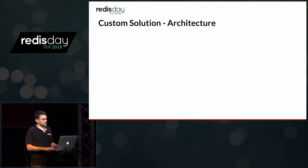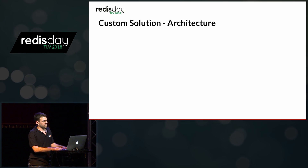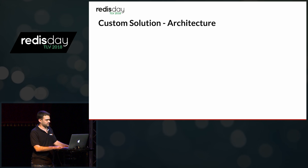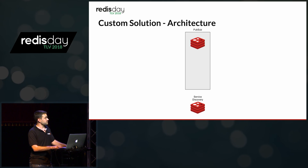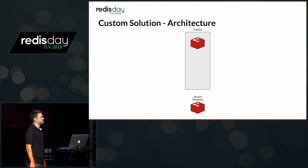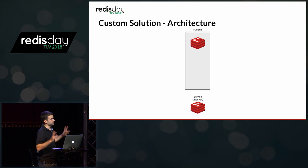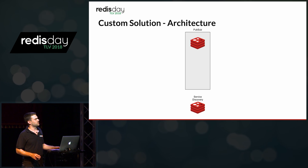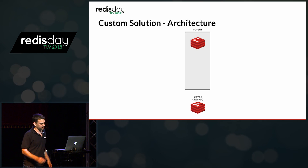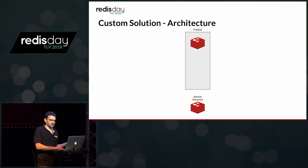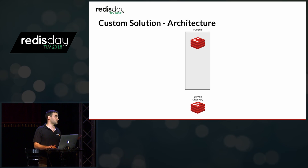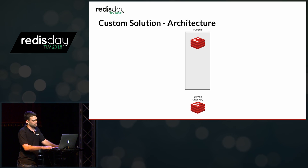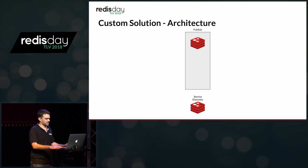So we came up with our own solution. This is another step-by-step diagram — I promise this is the last one. Our solution is split into two parts: we have the main PubSub section, currently containing only one node, and we have a service discovery. You can use whatever service discovery you want — Consul or whatever. We use Redis as well; if you want to know how, we can talk about it later.